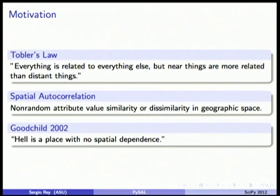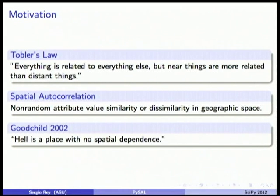Michael Goodchild, who's the father of GI science, has this famous quote that hell is a place where there wouldn't be any spatial autocorrelation. Think if elevation was randomly distributed in space — we wouldn't be here. Or if temperature wasn't spatially structured either.